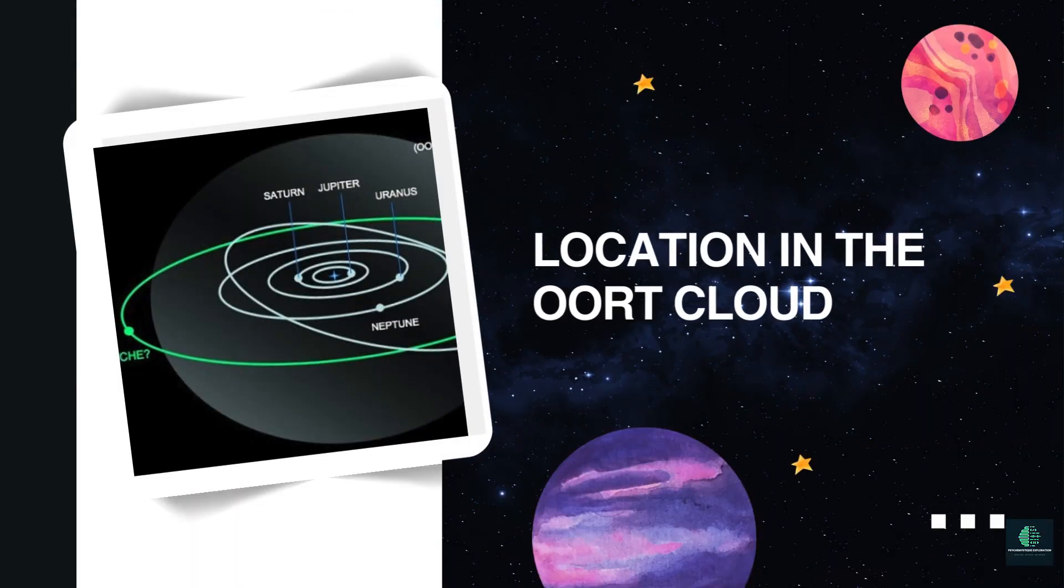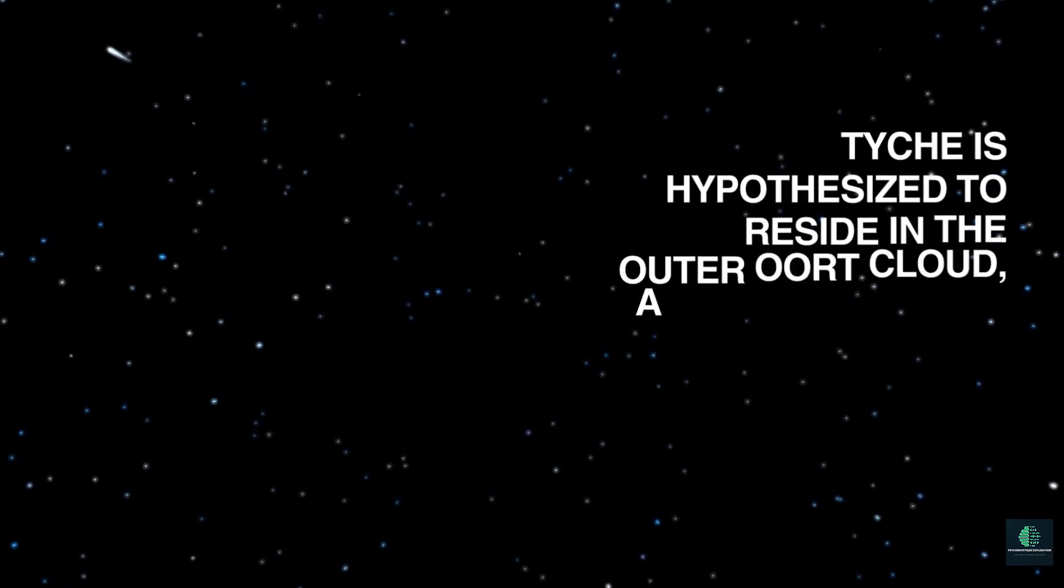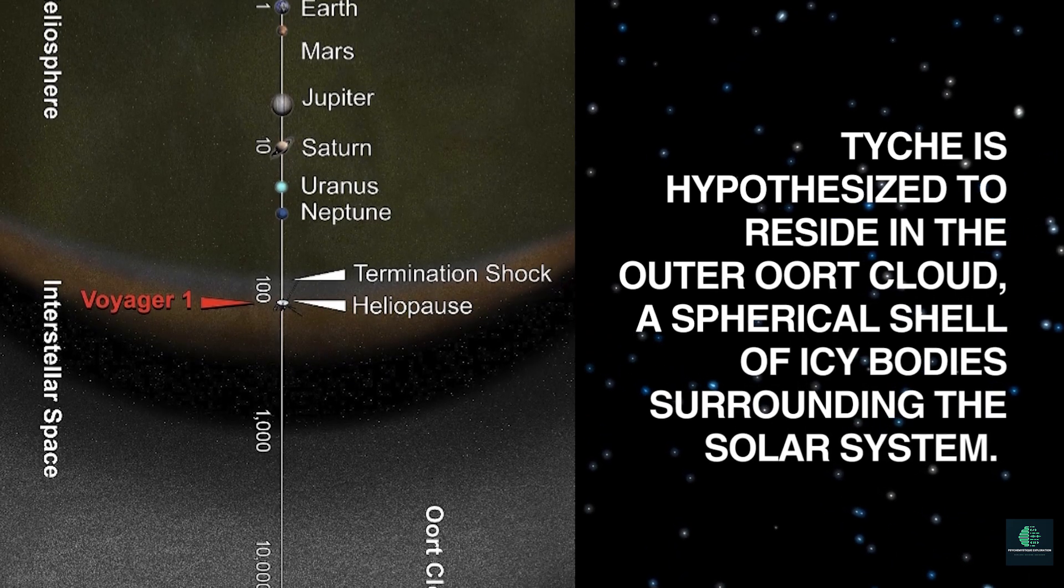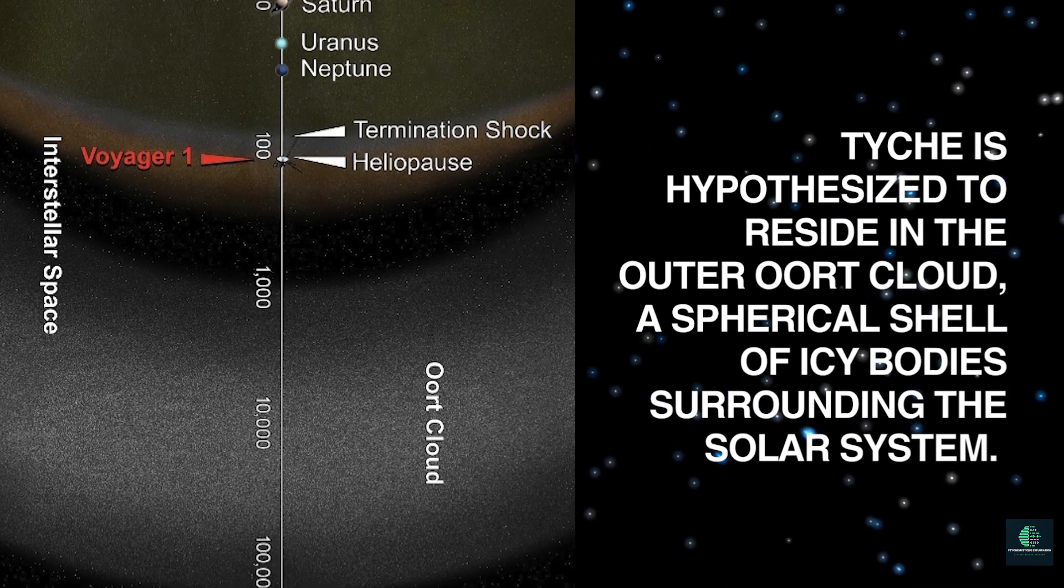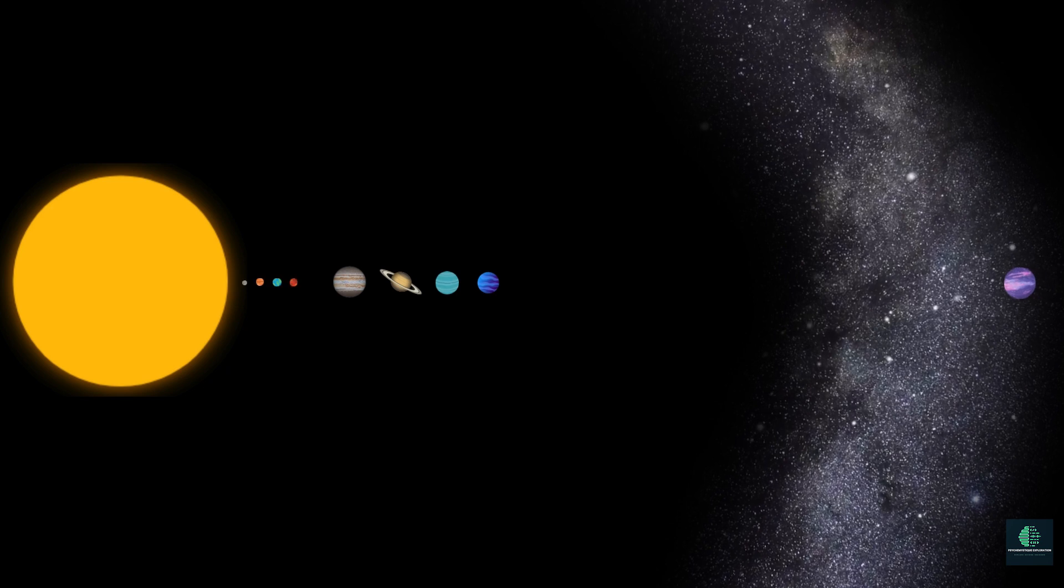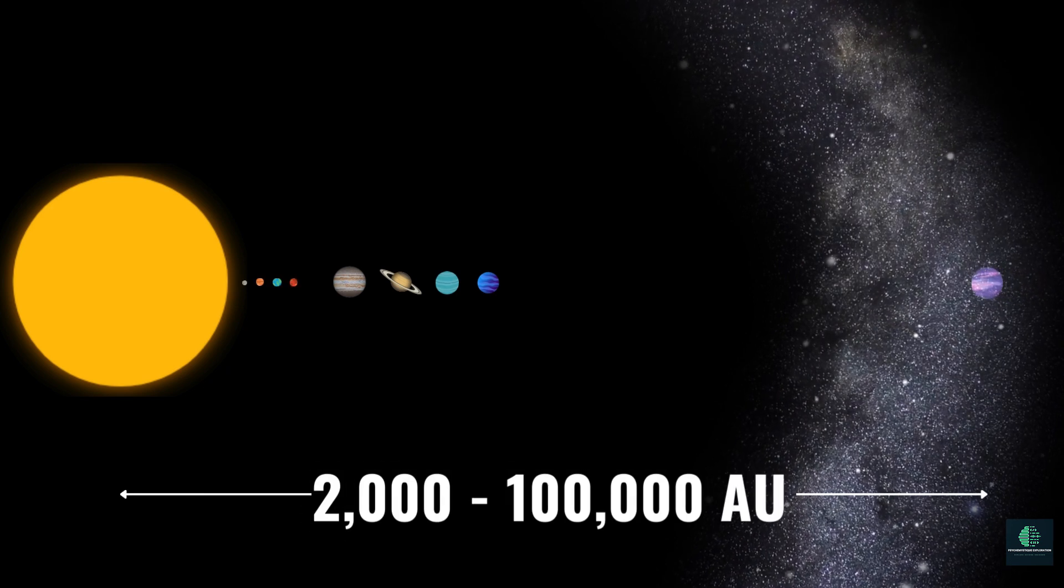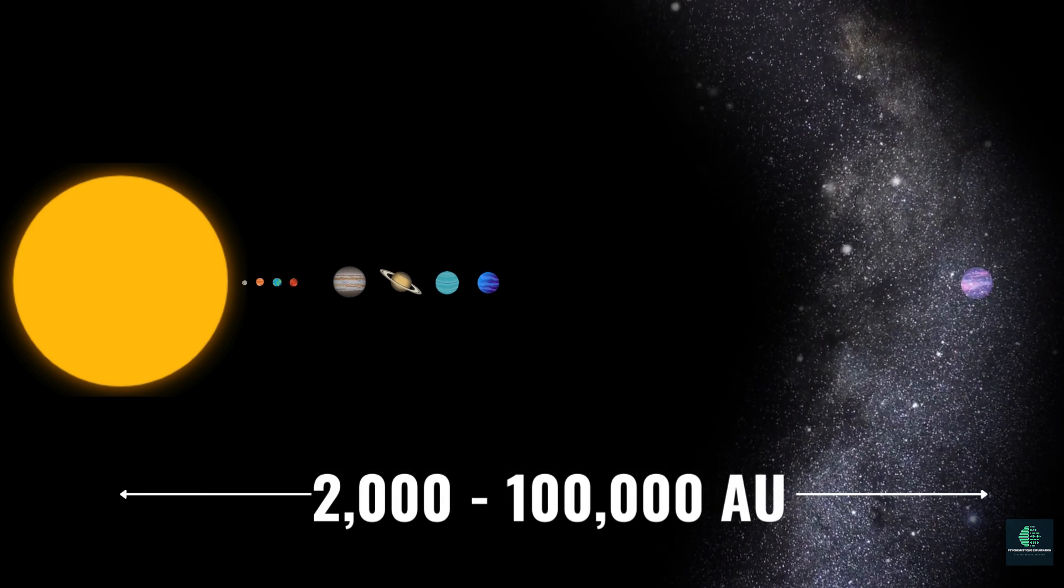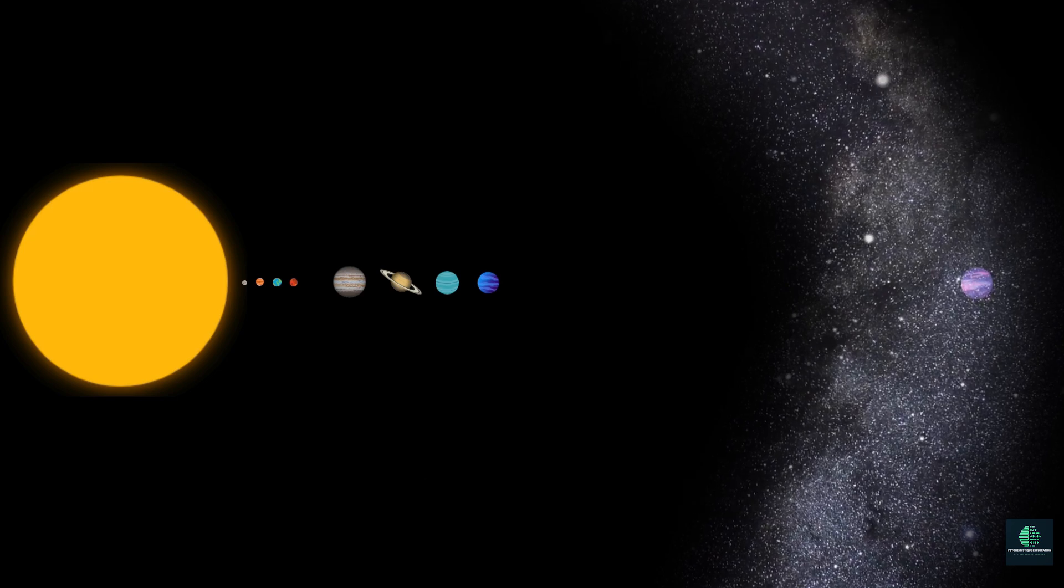Location in the Oort cloud: Teich is hypothesized to reside in the outer Oort cloud, a spherical shell of icy bodies surrounding the solar system. This region is extremely distant, ranging from 2,000 to 100,000 astronomical units from the Sun, making direct observation challenging.